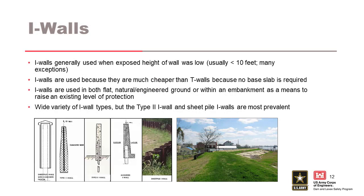I-walls were really intended to be used only when the cantilever height was low — under 10 feet — but there are many exceptions, some much taller than 10 feet. They're less expensive to build than T-walls: no base slab, no real foundation element other than driving sheet piles into the ground. They've been used on flat natural ground and in embankments. Many of the I-walls that failed were on embankments in New Orleans — soft embankments built of dredged soils. The Type 2 I-wall is the most prevalent type, used almost exclusively in New Orleans and in many places around the country.